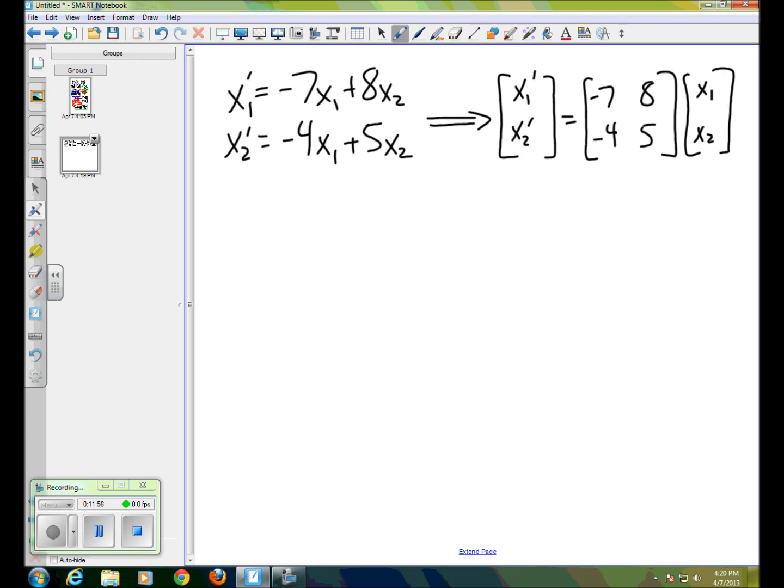And when we got our solution, our solution was that x, which is x1, x2, looked like d1 times 1, 1, e to the lambda t or 1t in this case, plus d2 times 2, 1, e to the minus 3t.